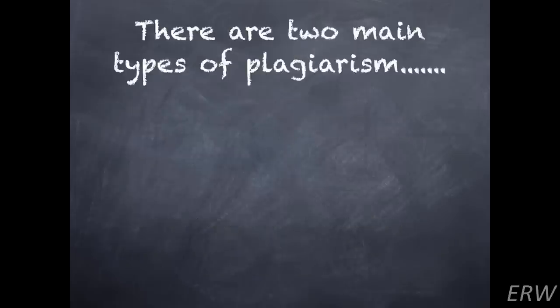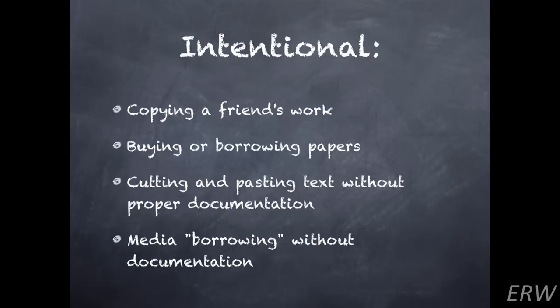There are two main types of plagiarism. The first one is intentional, where students or people mean to plagiarize — it's something that has been done on purpose. An example would be copying a friend's work, which is a clear example of plagiarism.